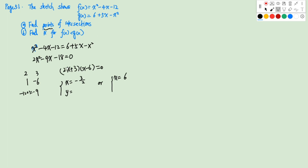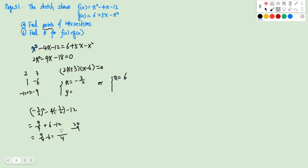Now we plug these x-values into f(x) to find y-coordinates. For x = -3/2: (-3/2)² - 4(-3/2) - 12 = 9/4 + 6 - 12 = 9/4 - 6 = -15/4. For x = 6: 36 - 24 - 12 = 0. So the points of intersection are (-3/2, -15/4) and (6, 0).